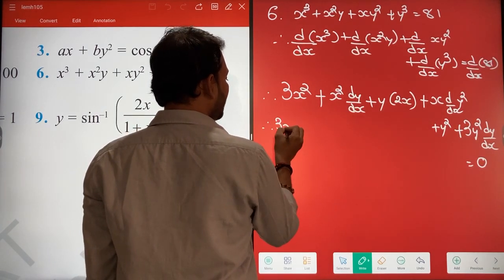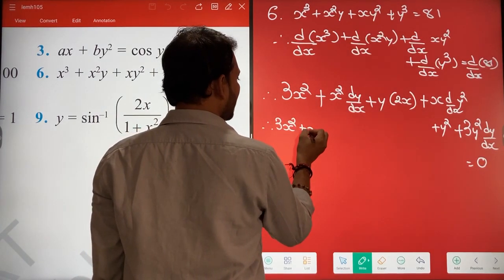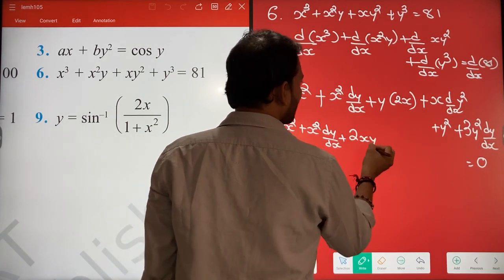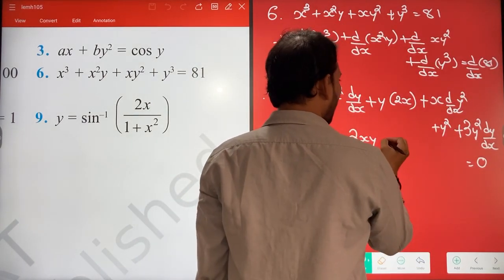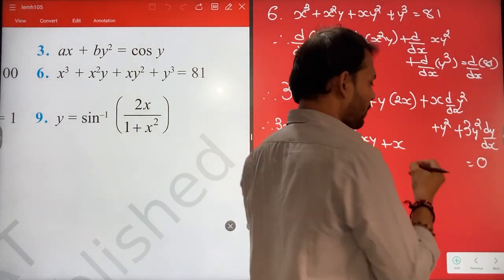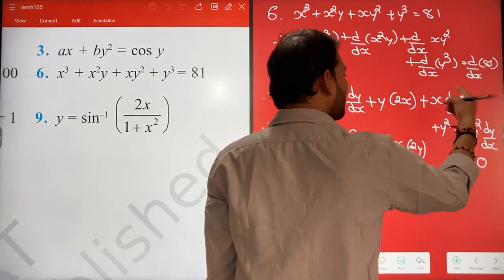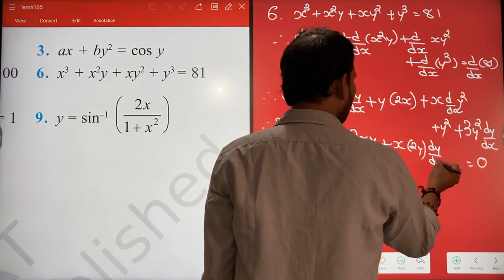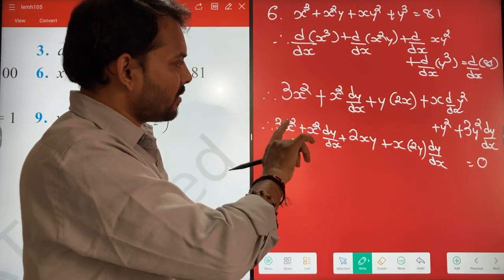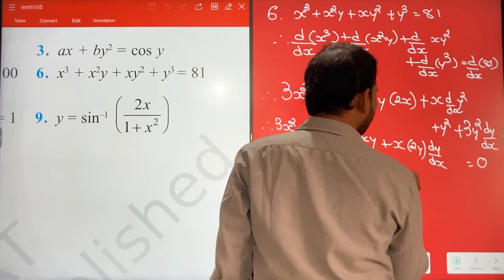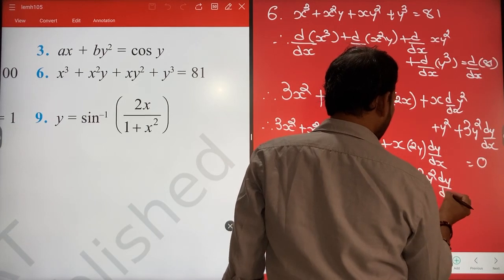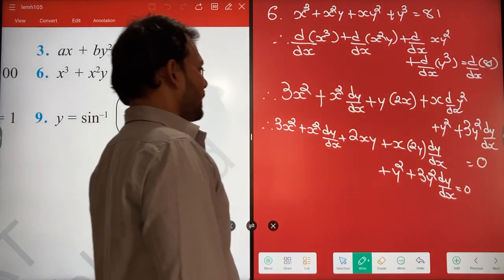Now, aage pathe hai, 3X square plus X square dy by dx plus 2XY, sab kuch jaisa hai waisa hai. Yaha pe karenge, to kya aayega? X to bahar, Y square ka kya ho jayega? 2Y. Y square ka ho jayega 2Y, aur phir papas Y ka karna pade. So dy by dx. Y square ka 2Y, correct. Plus Y square plus 3Y square dy by dx, that is equals to 0.